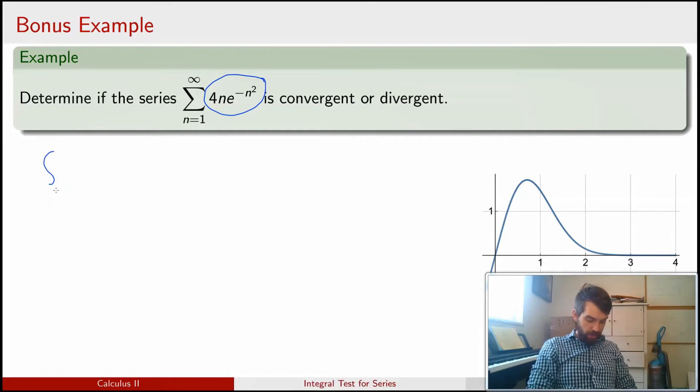Indeed, if I consider the improper integral from 1 to infinity of 4x e to the minus x squared dx—so I'm replacing my n with x here.